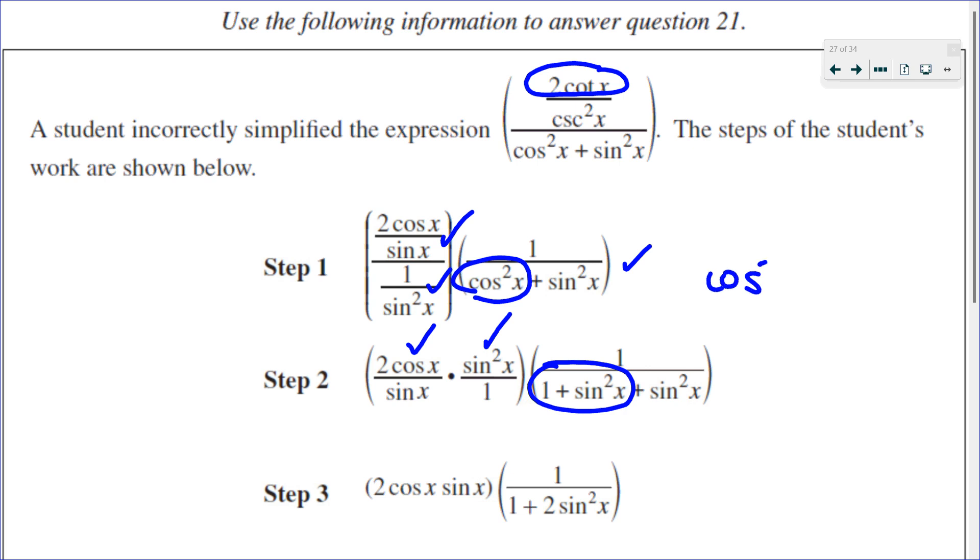If we look at Pythagorean identity number 1, I know that cos squared plus sine squared equals 1. So if I want to isolate for cos squared, I would subtract sine squared from both sides. And I would get that cos squared X is equal to 1 minus sine squared X, not 1 plus sine X. So this should be a minus. That is incorrect.